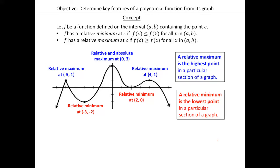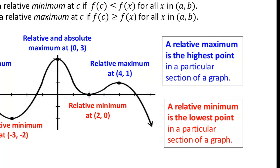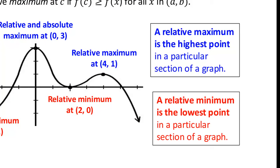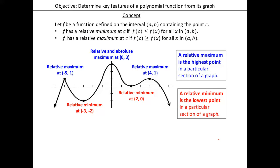Next brings us to the concept here — you guys need to copy this on your notes. At the bottom of page one, you have two text boxes you guys need to copy. The relative maximum is the highest point in a particular section of a graph. What it means by a particular section is you're looking at humps — you're looking for hilltops. At the very top of the hilltop, that would be your relative maximum. And then the relative minimum is the lowest point in a particular section of a graph.